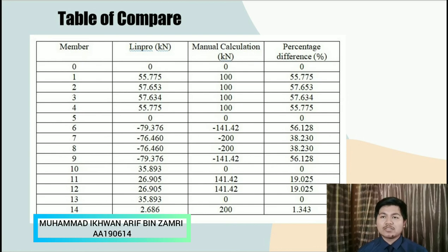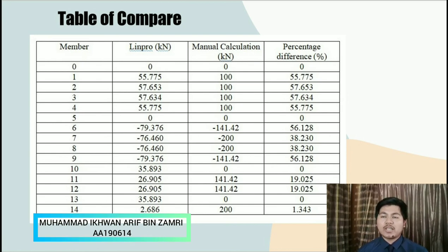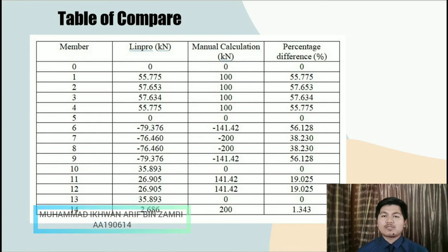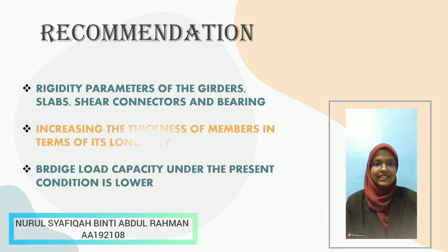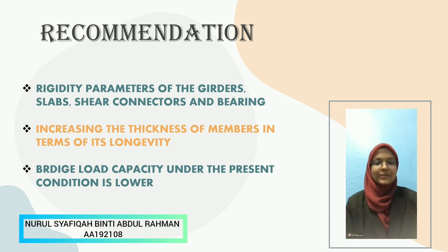That's all for me, thank you. As for the recommendation, the internal construction model is modified by changing the rigidity parameter of the girder, slab, shear connector and bearing so that the feature properties of the model fit their measurement. The reverse model is safer than the surface model for the current state of the bridge. We may enhance the model bridge by increasing the thickness of the members in terms of its longevity.